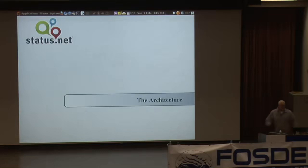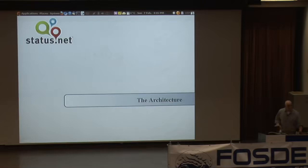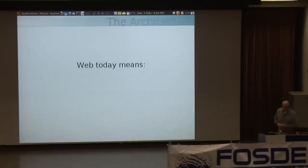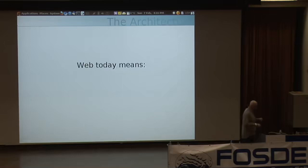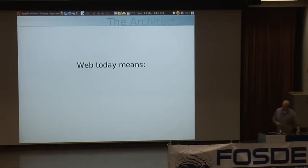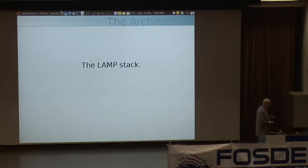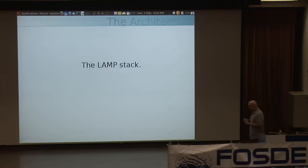Now that I've laid out my requirements, I'm going to go into the architecture of StatusNet. If you're developing an open source web piece of software today, it means the LAMP stack. If you want wide distribution of an open source platform on the web today, it's got to be LAMP — Linux, Apache, MySQL, and PHP. You can swap in FreeBSD or Nginx or PostgreSQL, but the basic architecture is a web front end, PHP doing execution, and an RDBMS providing the backend. This is what's available on commodity web hosting right now.